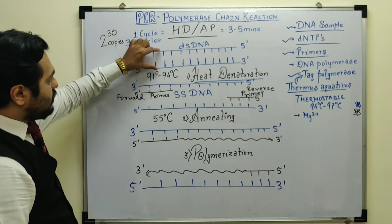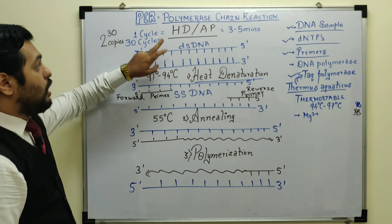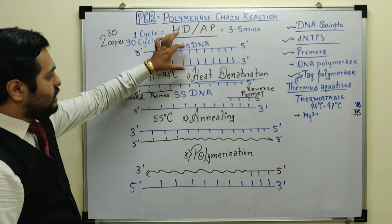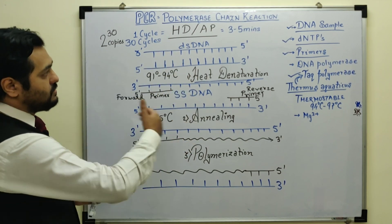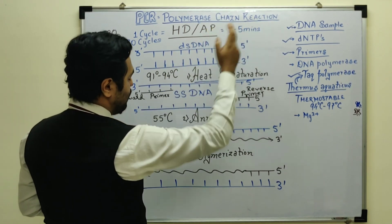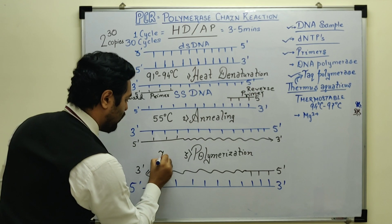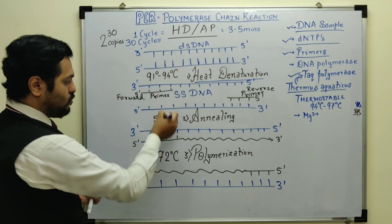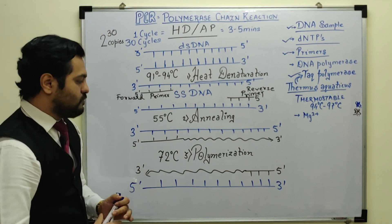From one DNA we got two DNA — that was one cycle. This will repeat again: heat denaturation, annealing, polymerization. After such cycles, amplification keeps happening and the chain reaction proceeds. The temperature used for polymerization is 72 degrees Celsius. These temperatures are very important for entrance exams and board exams.